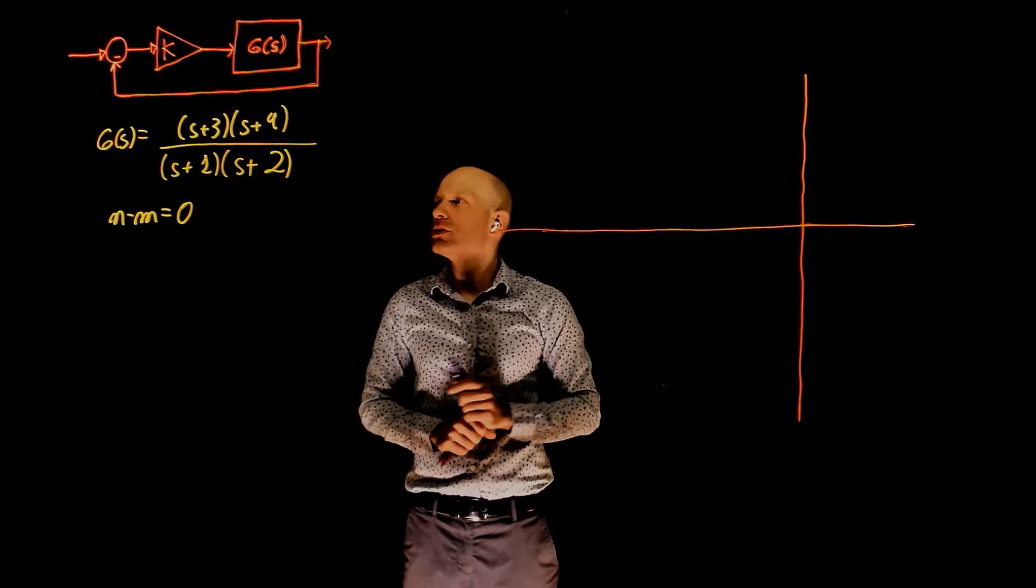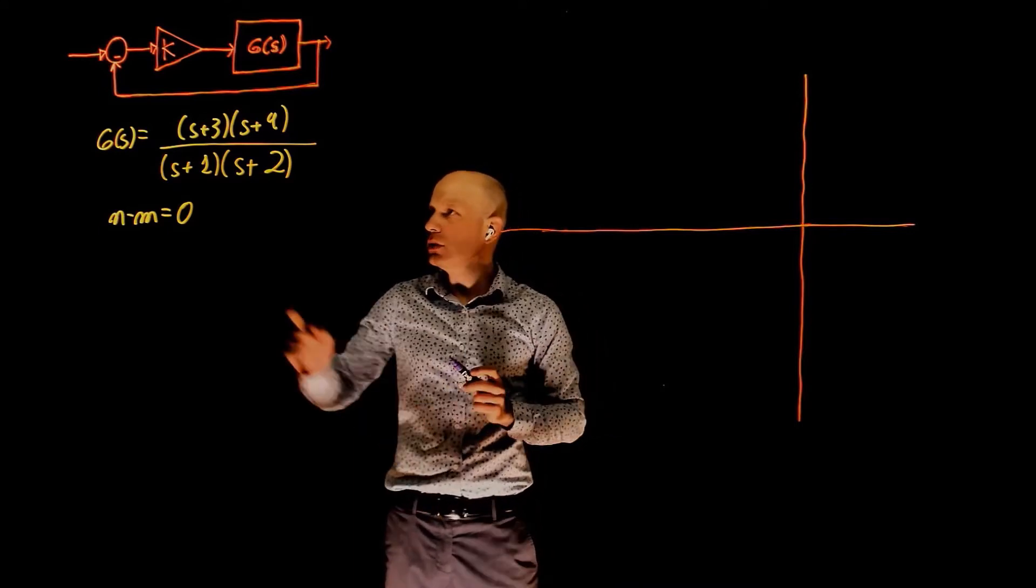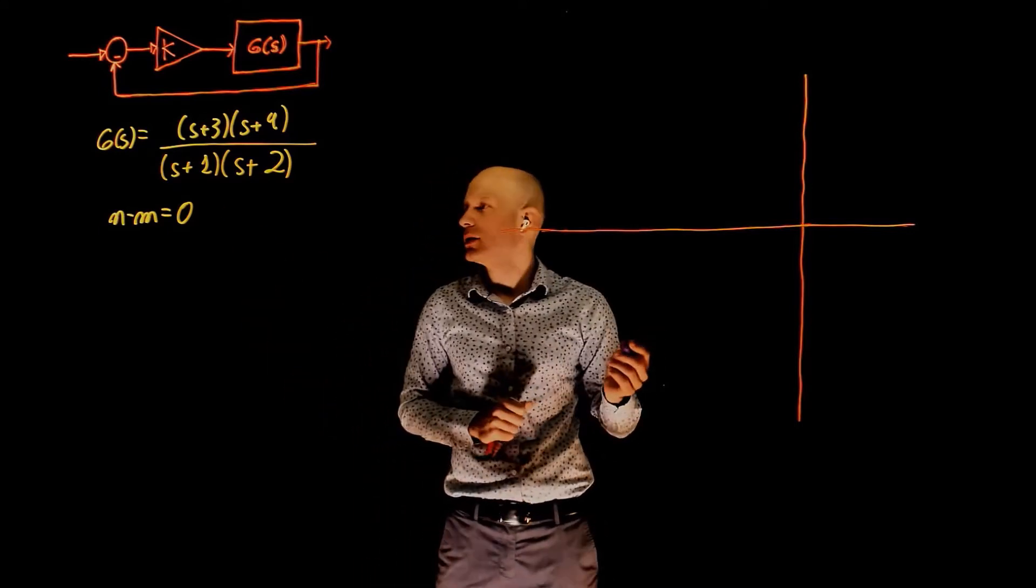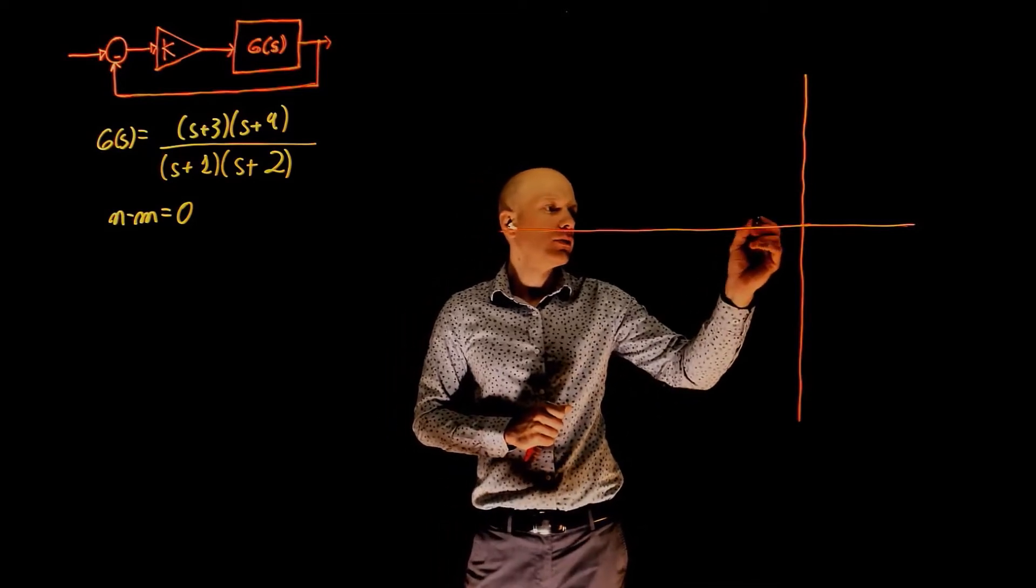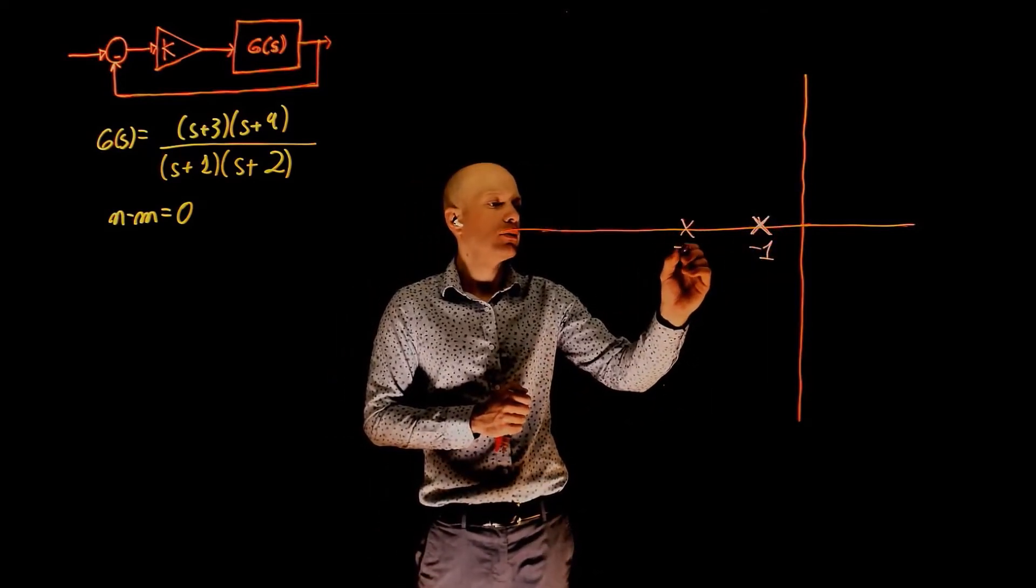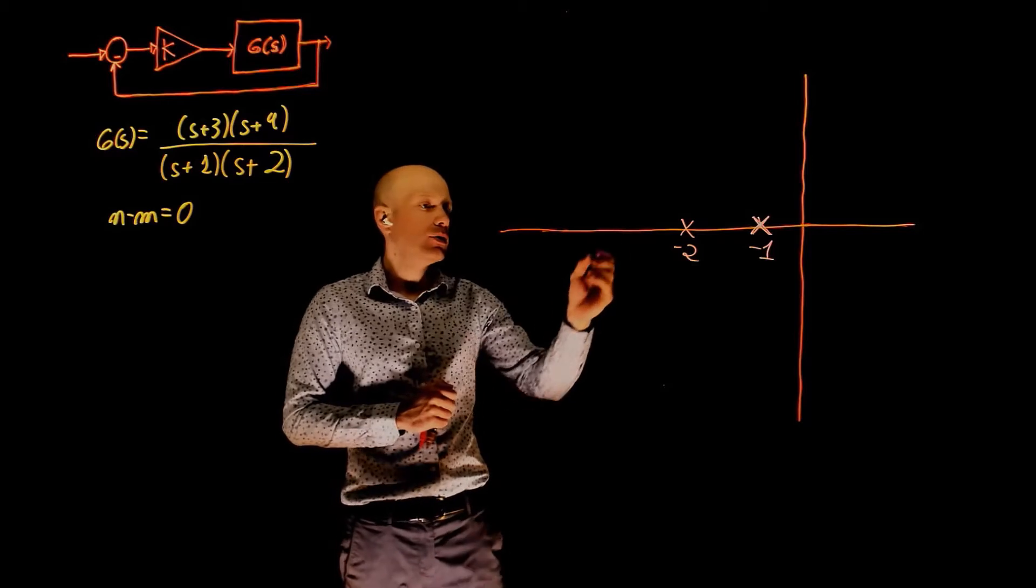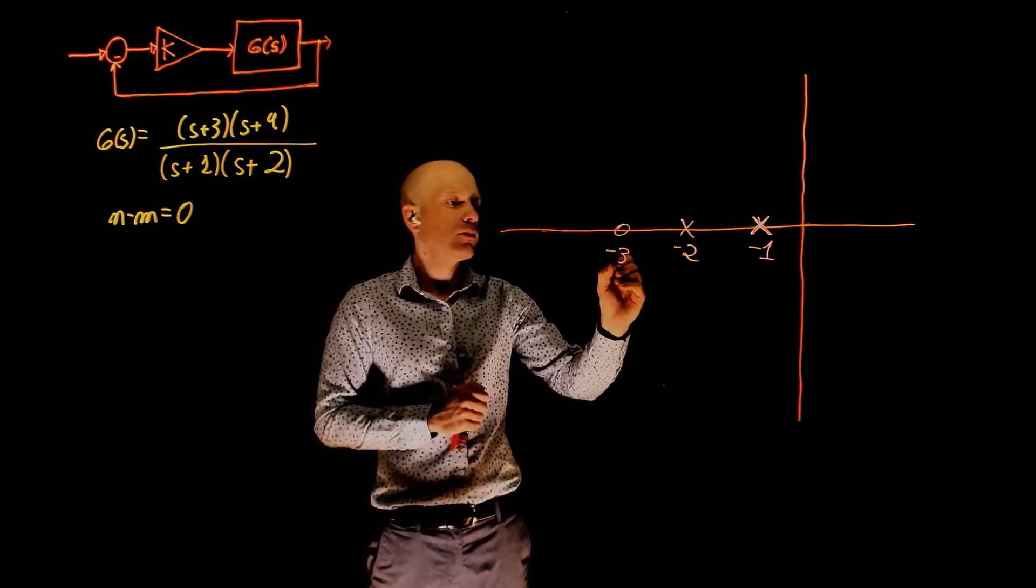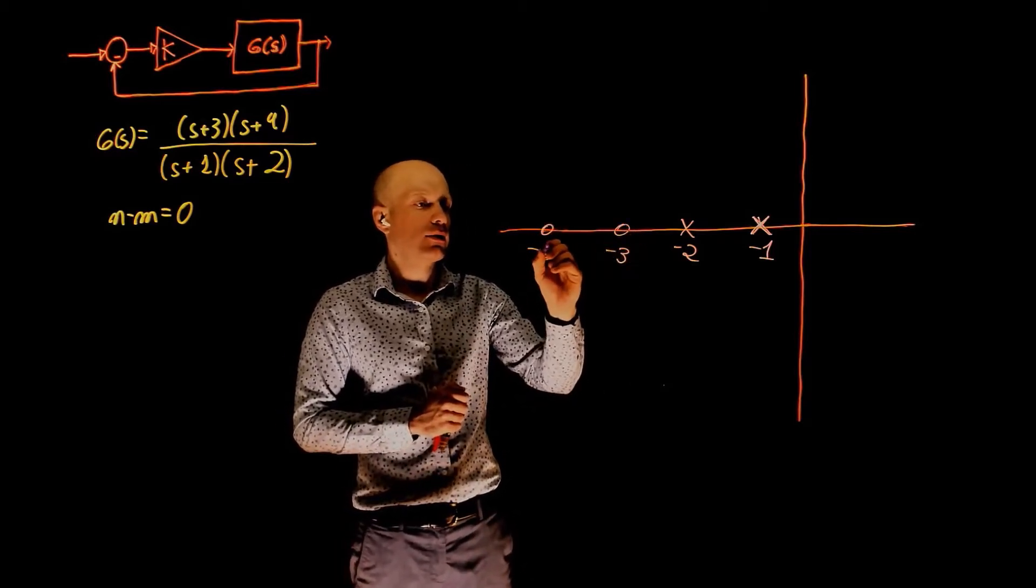Now let's place the poles and zeros on the S-plane. Starting with the poles, we have a pole at negative 1, we have a pole at negative 2, we have a zero at negative 3, and we have another zero at negative 4.